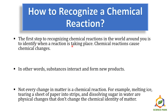The first step to recognizing a chemical reaction is to identify when a reaction is taking place. Chemical reactions cause chemical changes — substances interact with each other and form a new product. Not every change in matter is a chemical reaction. For example, melting ice, tearing a sheet of paper into strips, and dissolving sugar in water are all physical changes that don't change the chemical identity of matter.